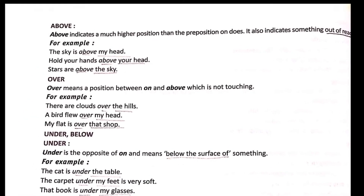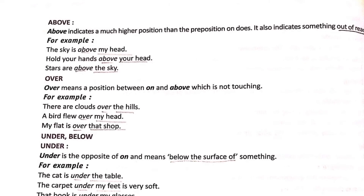Then comes 'above'. Above indicates a much higher position than 'on' does. It also indicates something out of reach. For example: 'The sky is above my head' — you cannot touch the sky, it is out of reach. So we use 'above' there. Other examples: 'Stars are above the sky.' 'Hold your hands above your head.'